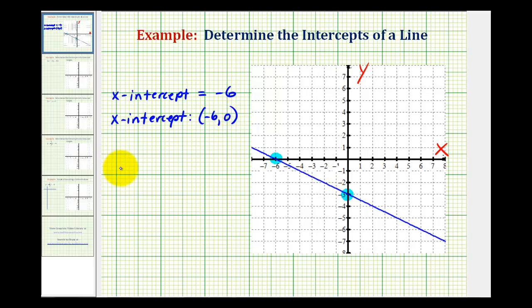And then for the y-intercept, we can say the y-intercept equals negative 3. Or again, we can list it as an ordered pair. We can say the y-intercept is the point 0, negative 3.